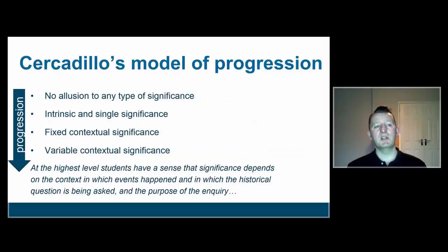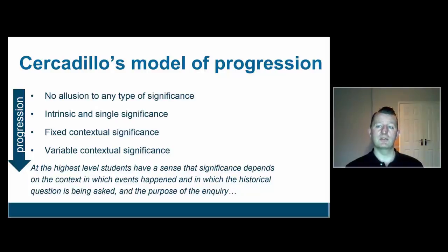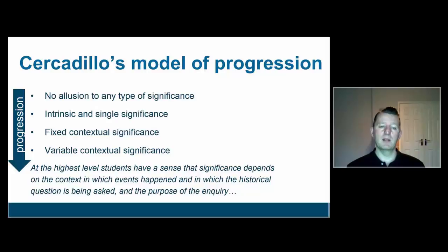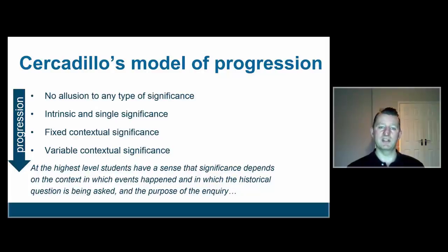Cercadillo, who was a PhD student with the Project Chatter team, undertook research on significance as a second order concept — trying to describe how children make progress over time in their use of the concept. She says that people start off not really making any kind of judgment about significance. Then they develop a simple notion that significance is intrinsic — that the event is significant, that you can spot it because everyone would agree, in the same way that you might state a factual characteristic of an event.